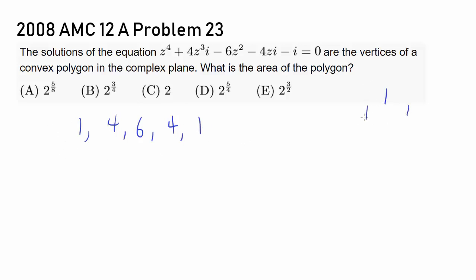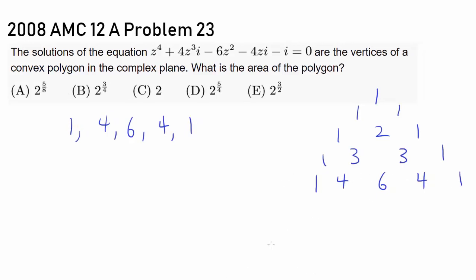When you look at Pascal's triangle, you have 1, 1; 1, 2, 1; 1, 3, 3, 1; 1, 4, 6, 4, 1. So we have this row of binomial coefficients for the fourth power.